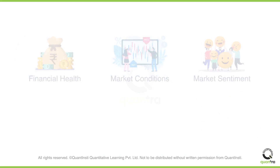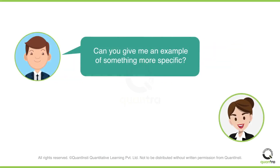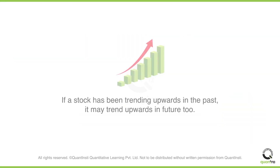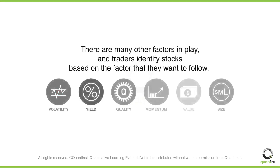That's quite a broad concept. Can you give me an example of something more specific? Sure. Consider the momentum factor. It's been known that stocks that have momentum tend to follow their recent performance. So if a stock has been trending upwards in the recent past, chances are that it'll trend upwards in the near future too. Similarly, there are many other factors in play, and traders identify stocks based on the factor that they want to follow.